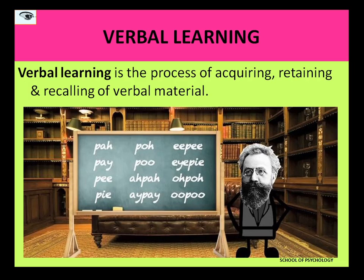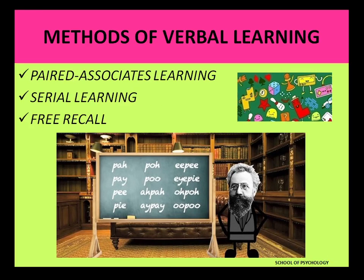Here we have the methods very clearly depicted. We have these three very important methods: paired associates learning, serial learning, and free recall.